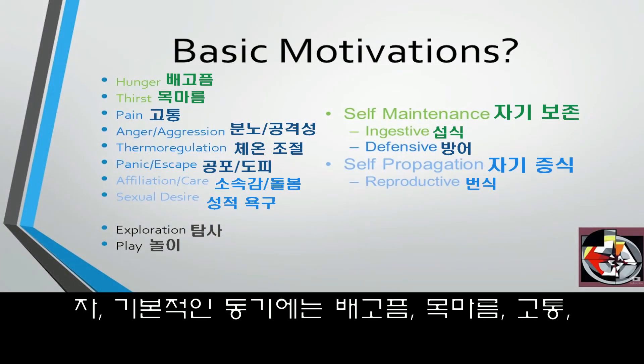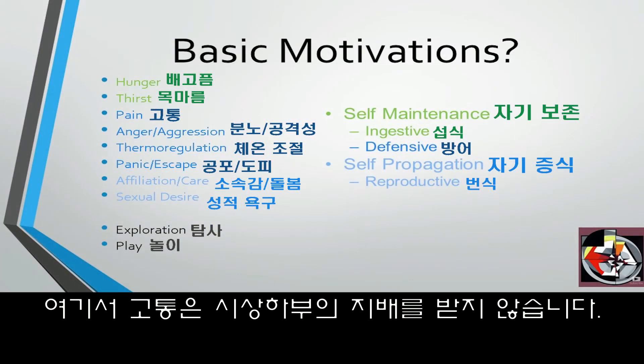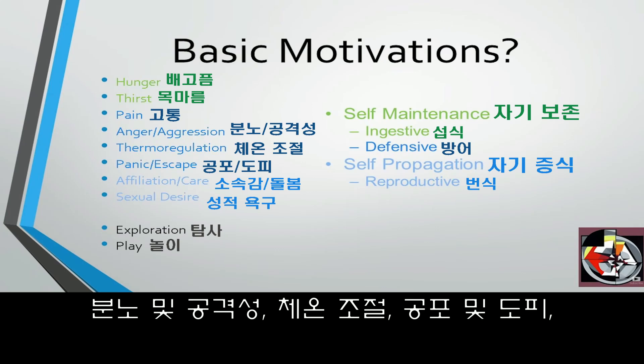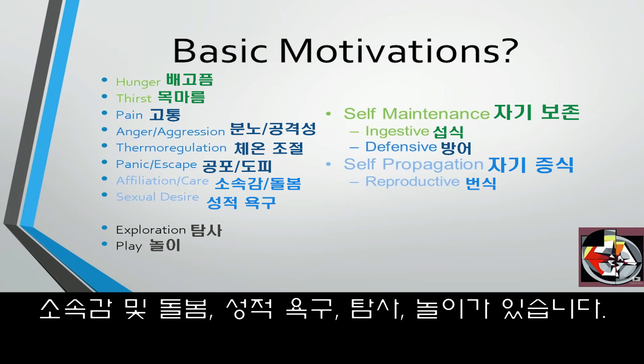So, basic motivations: hunger, thirst, pain — though pain is not regulated by the hypothalamus, that's a different circuit — anger and aggression, thermal regulation, panic and escape, affiliation and care, sexual desire, exploration, and play.